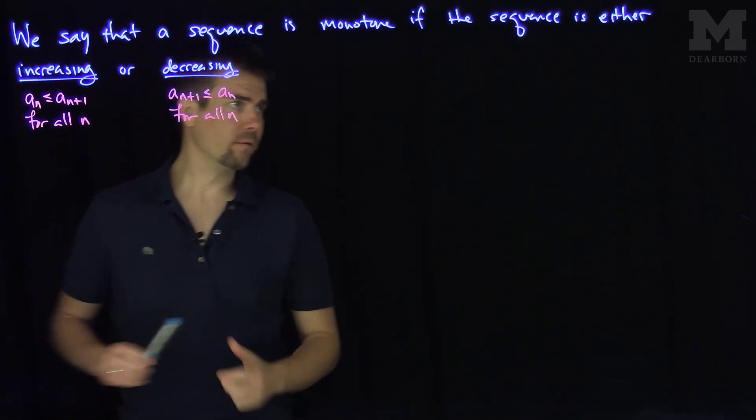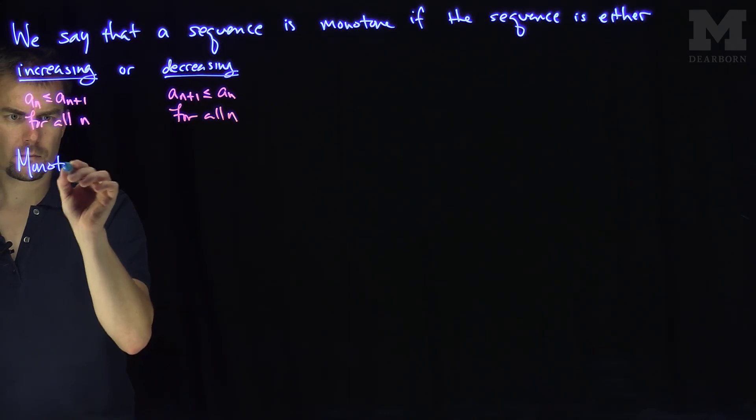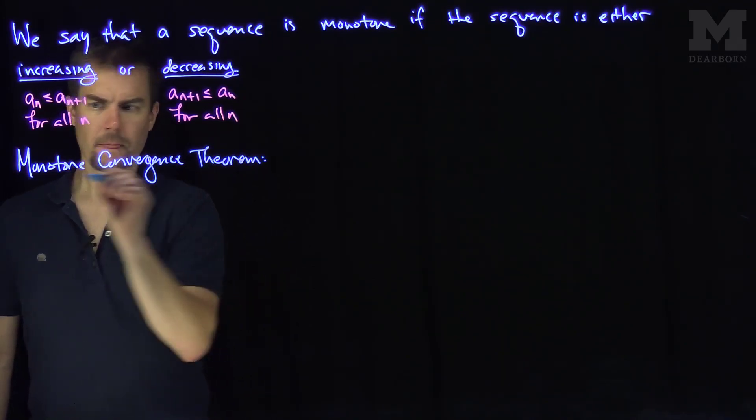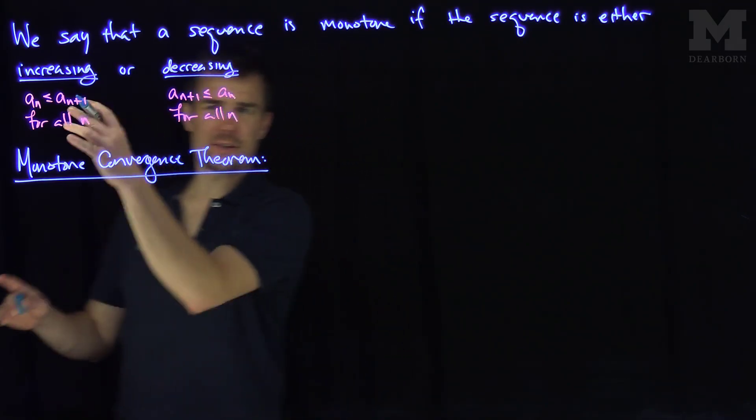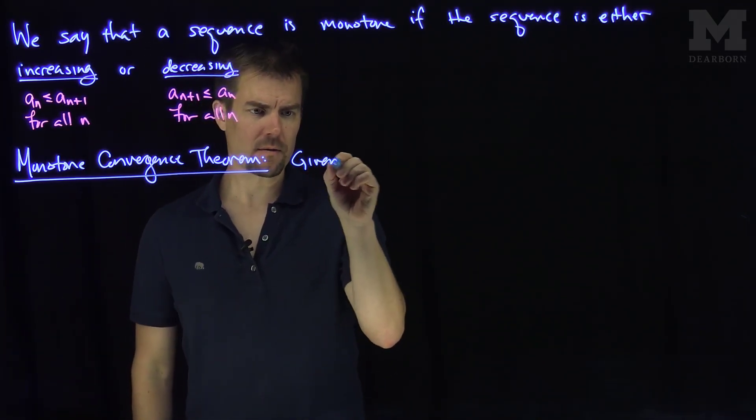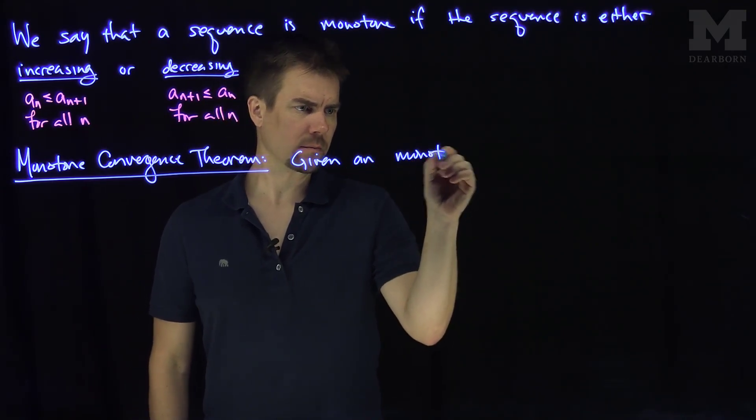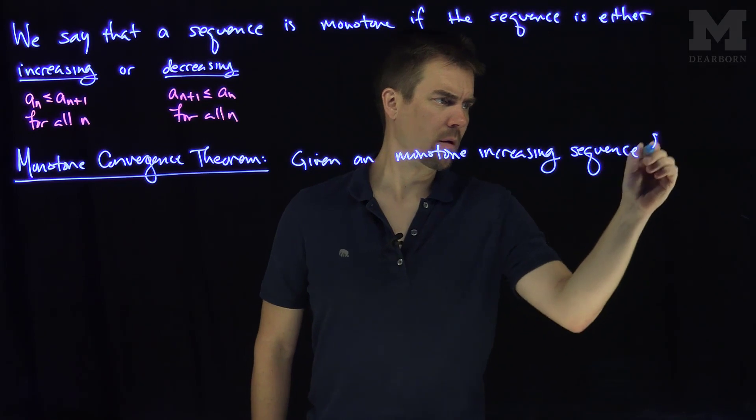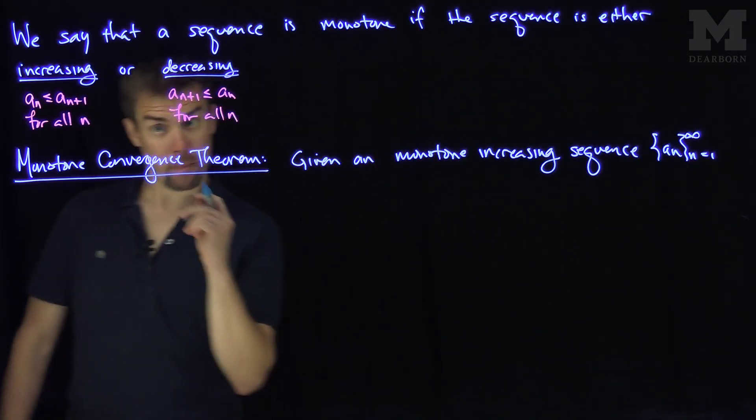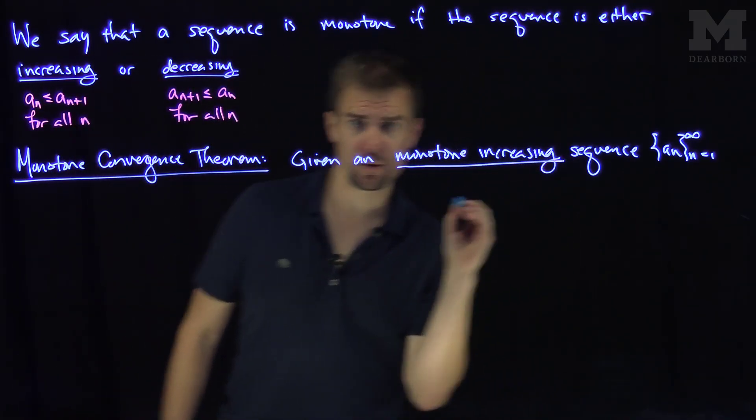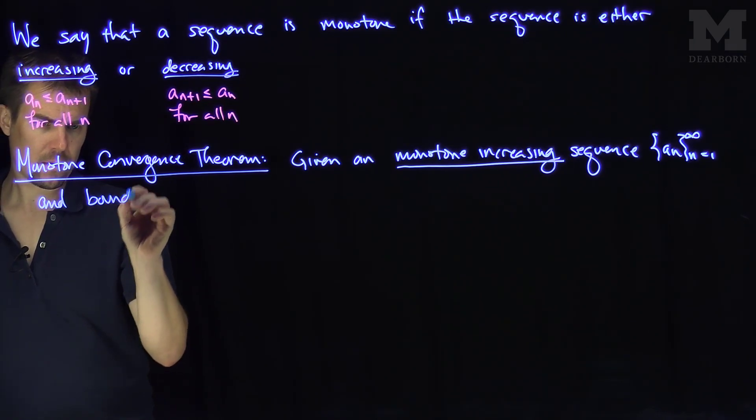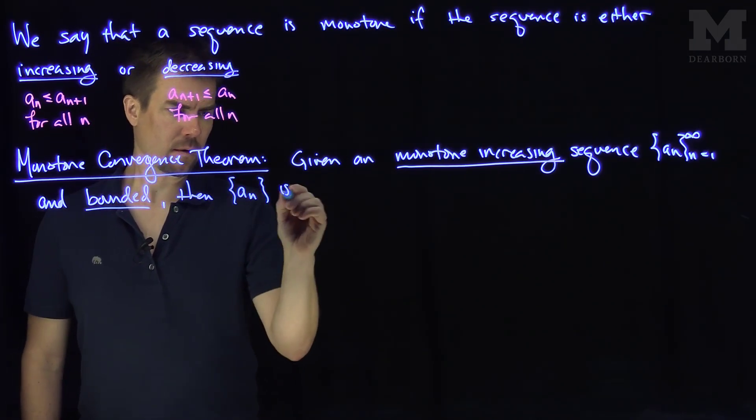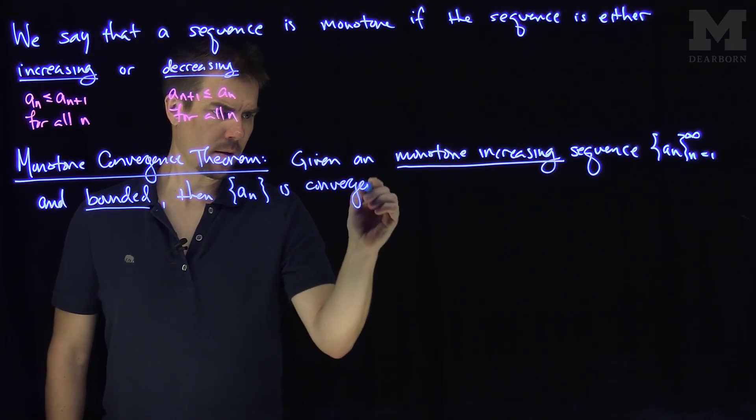Now we can state the monotone convergence theorem. The monotone convergence theorem states the following: Given a monotone increasing sequence a_n that is bounded, then a_n converges.